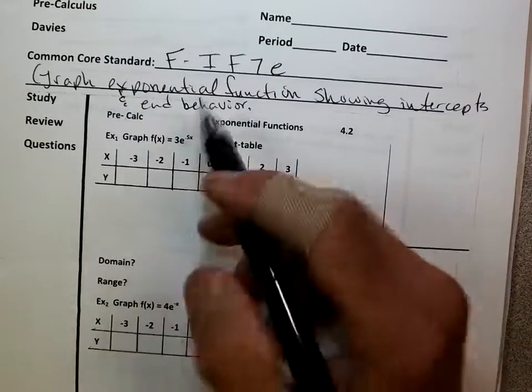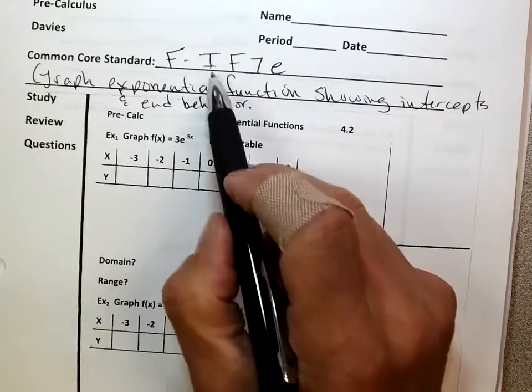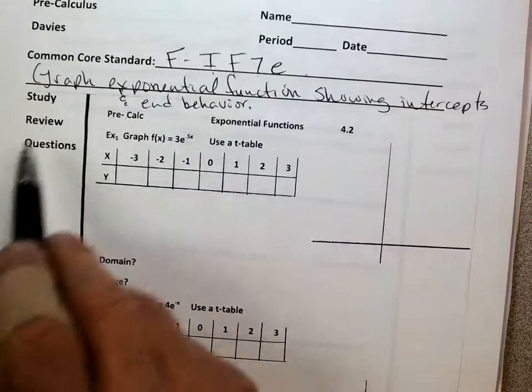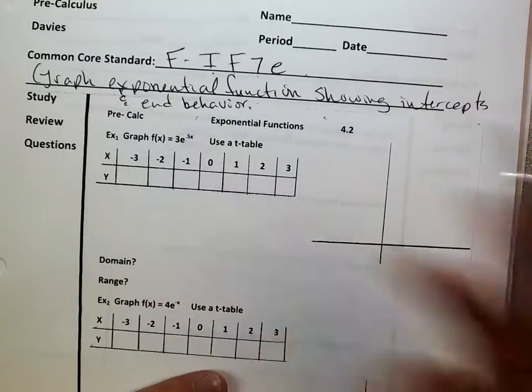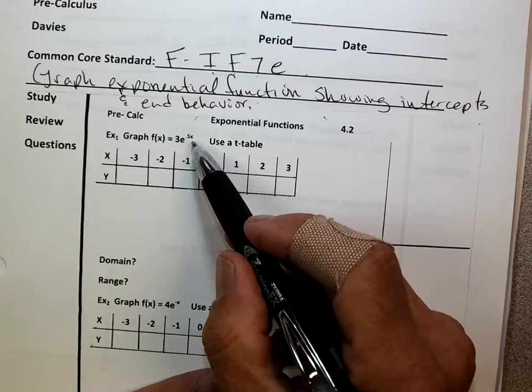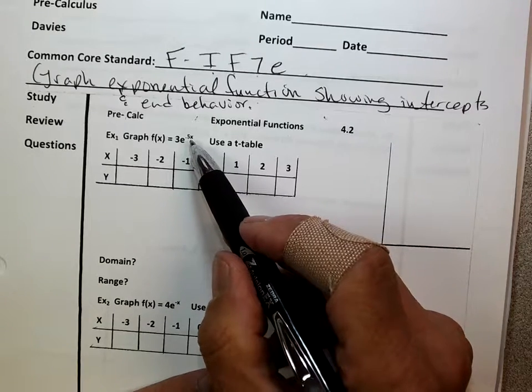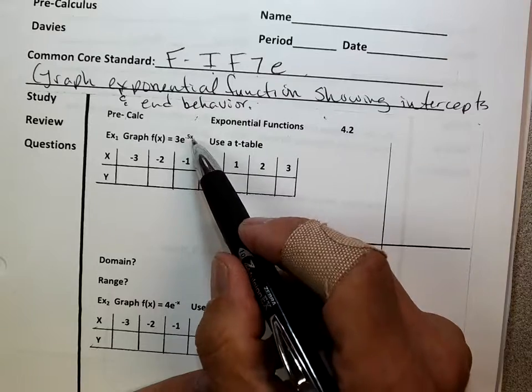So we're going to talk today, our common core standard is F.IF.7E, which stands for functions, to graph exponential functions showing intercepts and end behavior. All right, so how do I know this is an exponential function? It's really easy. The x is in the exponent. It's that easy. It's exponential because the x is in the exponent.